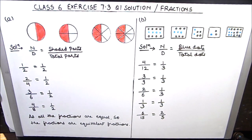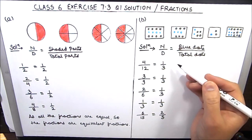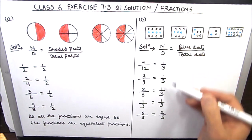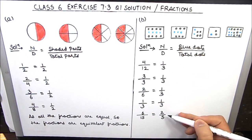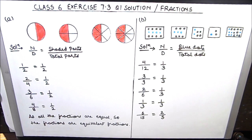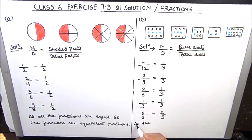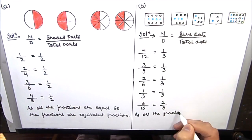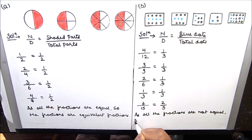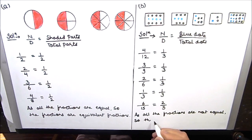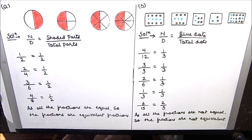We have written fractions for all the pictures. Now we see that out of these 5 fractions, only 4 fractions are equal — the last one is not equal. Hence the fractions are not equivalent fractions. The answer for the second part is: as all the fractions are not equal, the fractions are not equivalent fractions. This completes question 1 of exercise 7.3.